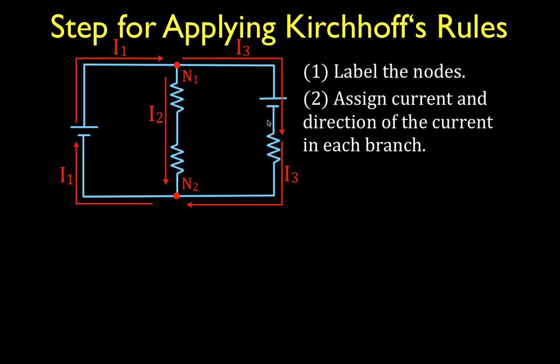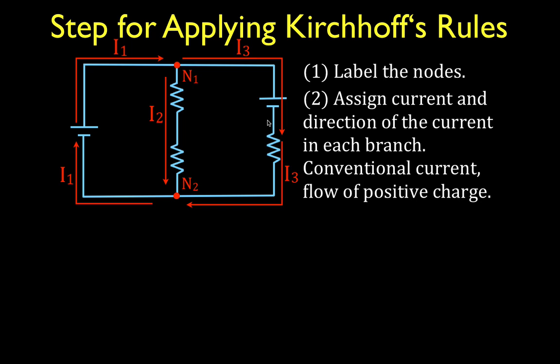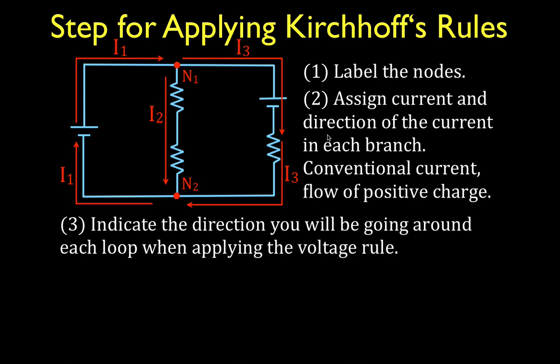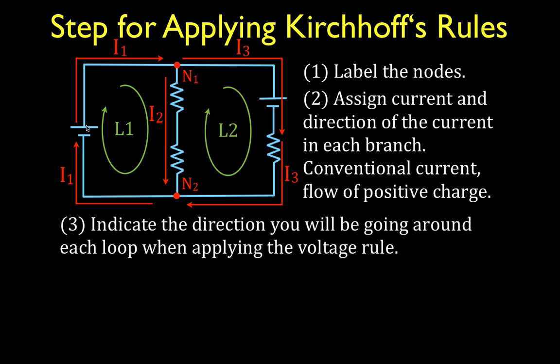When we apply Kirchhoff's rules and find the current, what we're finding is the conventional current, which is the flow of positive charge. The electrons actually flow in the opposite direction, but this is for conventional current. Now, we have to do one thing so that we can apply the voltage rule: we have to indicate the direction we will go around each loop. We have two loops — loop 1 and loop 2 — and we're going to go around both clockwise.